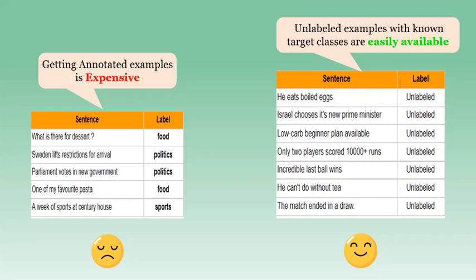In technical terms, these unlabeled examples should follow the distribution of the labeled examples. We will see next how these unlabeled examples can be utilized to improve the performance of text classification.